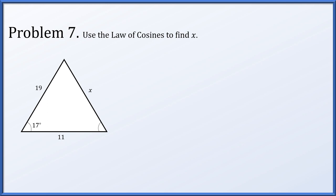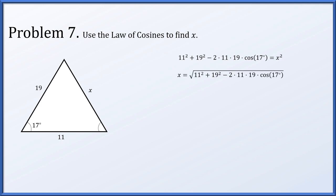Problem seven: use the law of cosines to find x in the given diagram. The law of cosines is like a generalized Pythagorean theorem: one side squared plus another side squared equals the third side squared, minus a correction term of 2 times the product of those two sides times the cosine of the angle between them. Since we have the angle between sides 11 and 19, we compute x² = 11² + 19² − 2(11)(19)cos(17°), giving x as the positive square root, approximately 9.07.